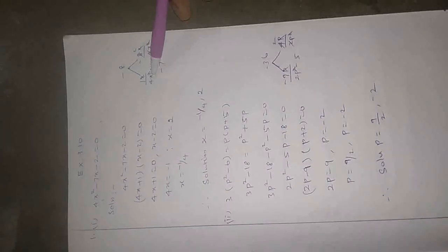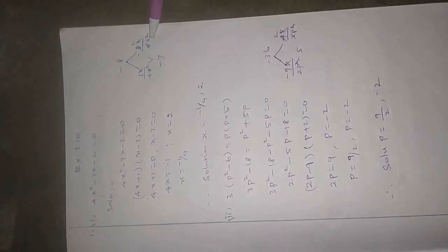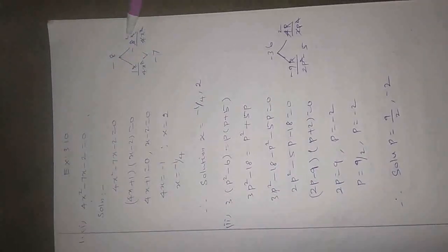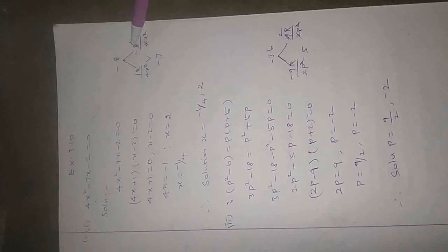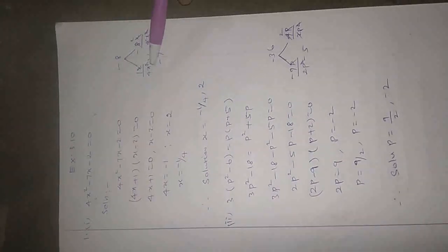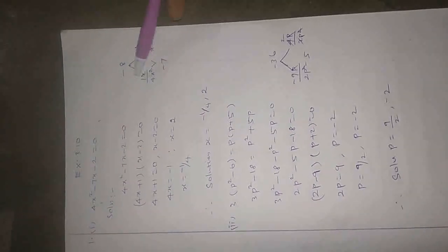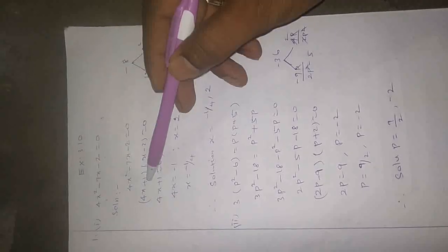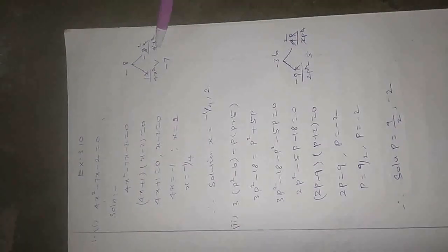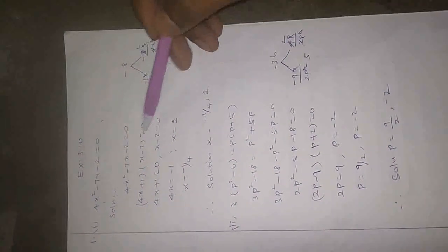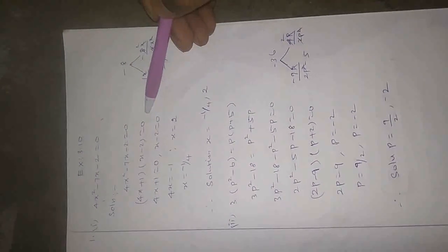First term: 4x squared. Split: x×x cancel. 1 four is 4, 2 fours are 8. x×x cancel. So this side gives 4x plus 1, and this side gives x minus 2, equal to 0.